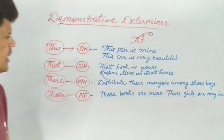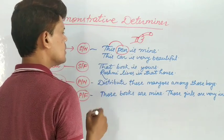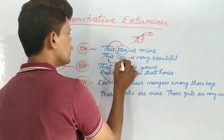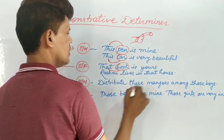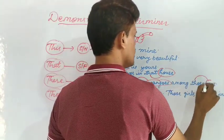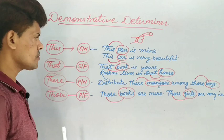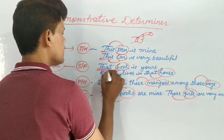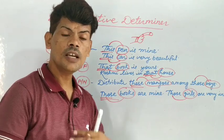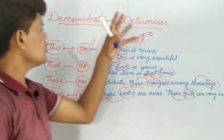Here you can see demonstrative determiner indicates objects: this pen, that book, this car, that house, these mangoes, those boys, those books, those girls. This, that, these, those — they are demonstrative determiners. They indicate and point to objects, persons, places or things. So these are demonstrative determiners.